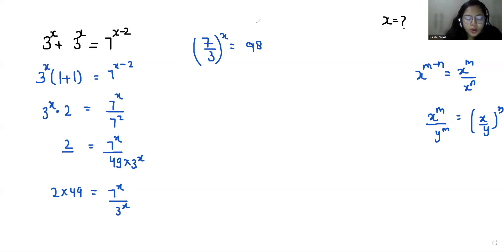Now I am taking log on both sides. So log 7 by 3 power x equals log 98. According to log rule, log a by b we can write it as log a minus log b.